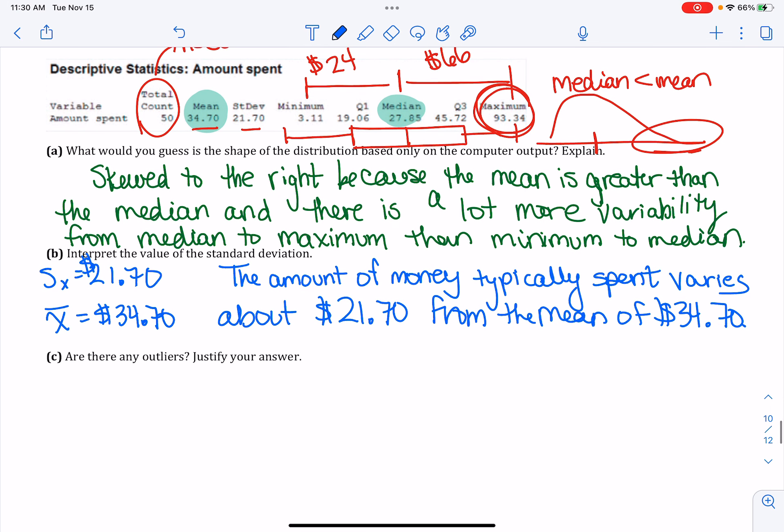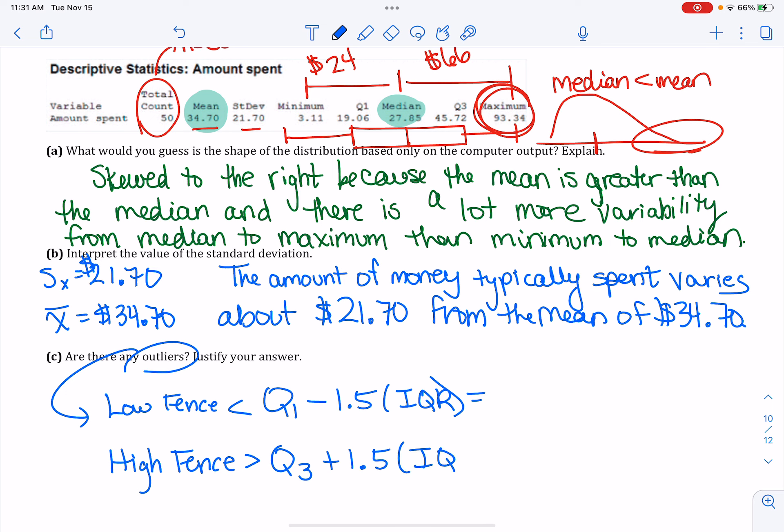Last but not least is the outliers conversation. So this is something you should know you need to memorize. The low fence calculation and the high fence calculation for outliers are as such. Anything lower than quartile 1 minus 1.5 times the interquartile range is too low. For the high fence, anything above quartile 3 plus 1.5 times the interquartile range is too high. I'm anticipating a potential high outlier, again, because of that right skewness that we saw and how much bigger the max was.